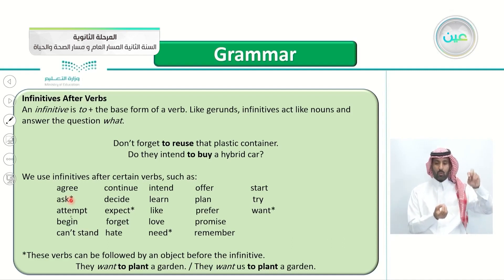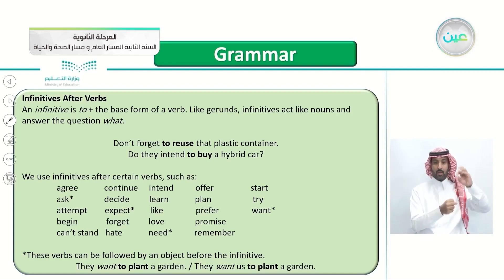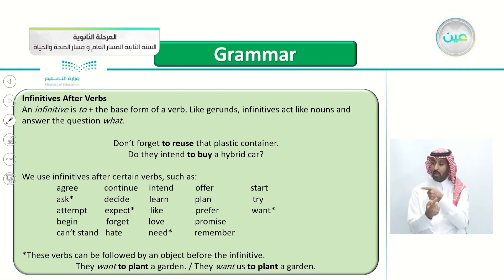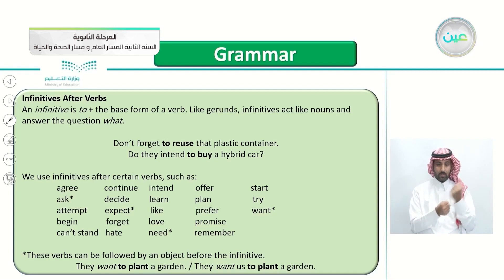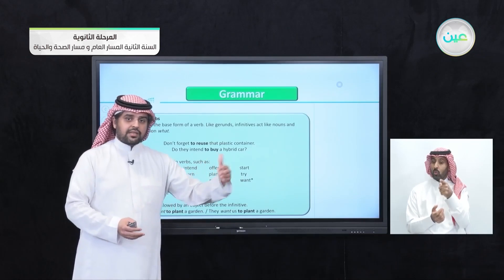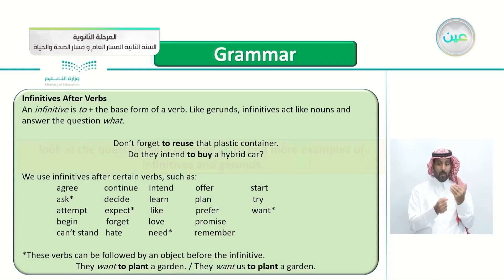Some verbs marked with a star can be followed by an object before the infinitive. For example: 'They want us to plant a garden.' Verbs such as ask, expect, need, and want allow you to put an object — like 'you' — before the infinitive: 'I want you to go and get me something.'